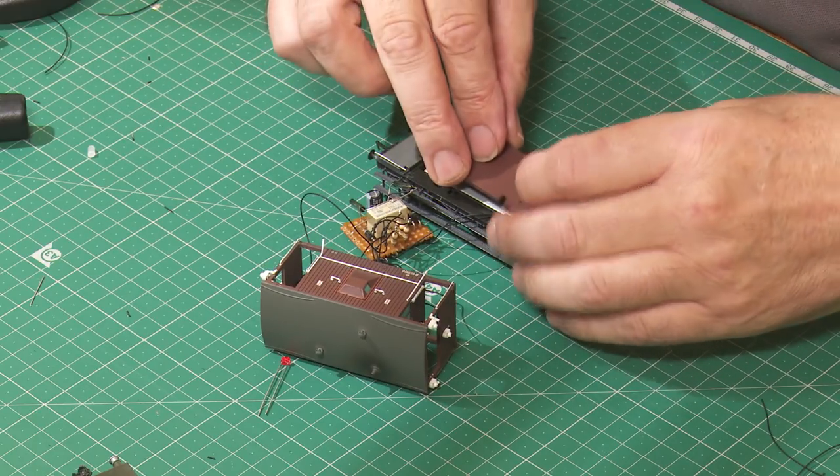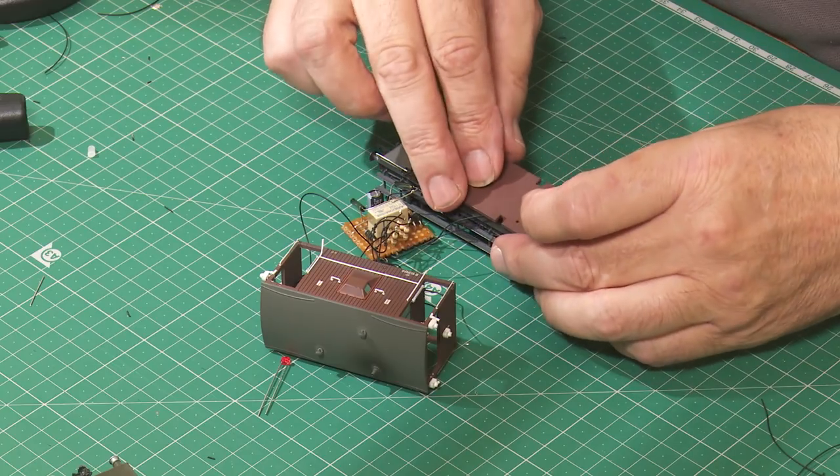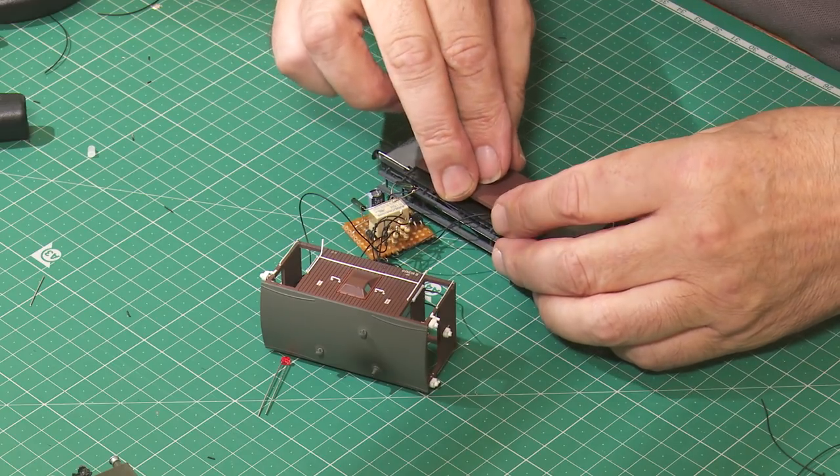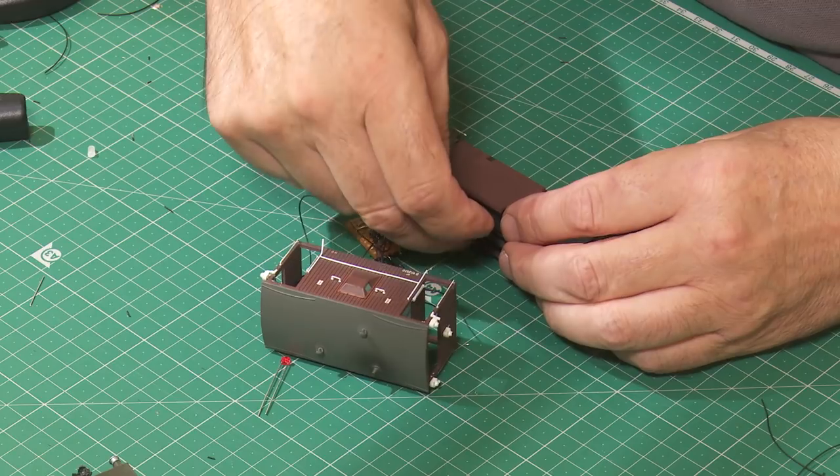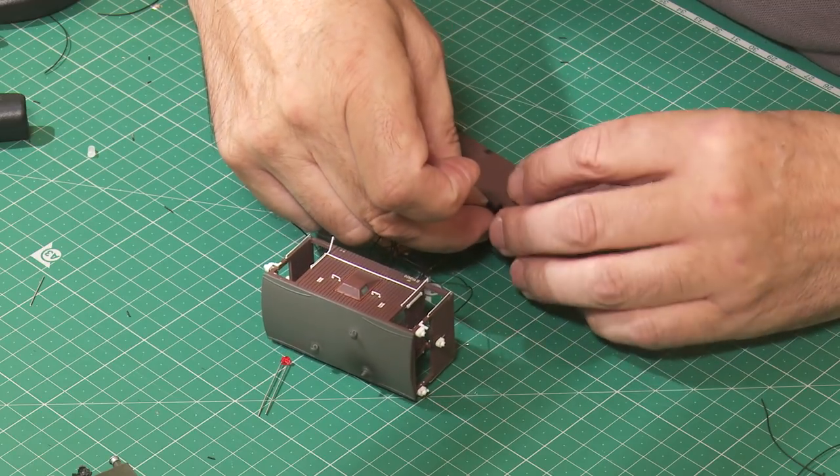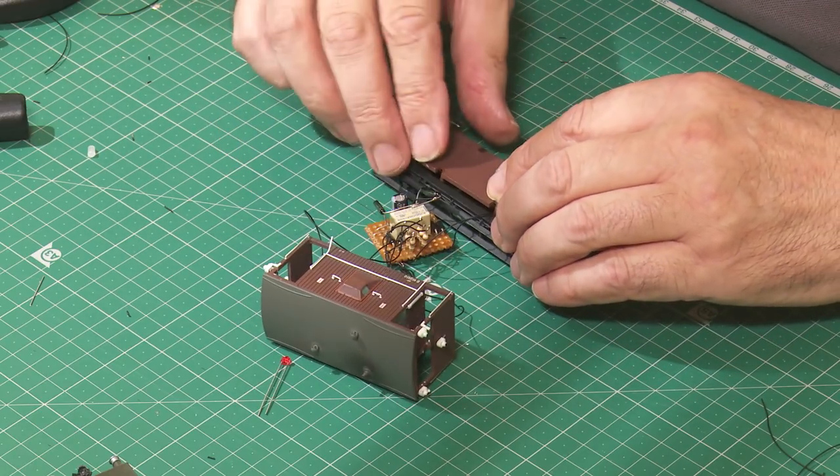Once that's in place, we can get the bed of the guards van back in place. And again, with those cables on that little cutout, we can then push down the bed of the guards van until it clicks into place.